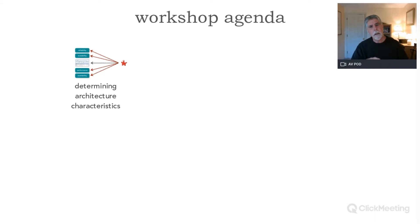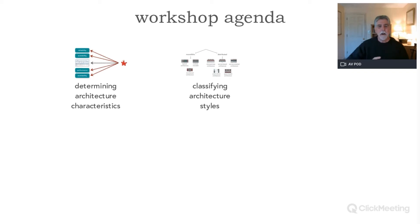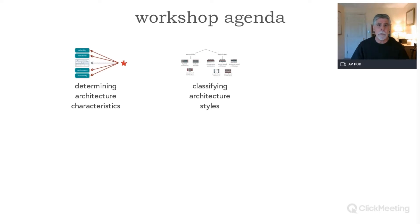Determining those architectural characteristics is the first key, and we will actually be doing an exercise on that. After we see how to identify those characteristics that are going to drive our decisions, the next thing we're going to do is look at an overall classification of architecture styles.